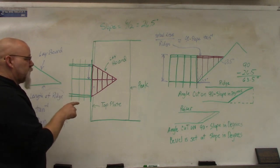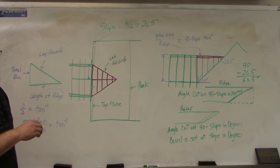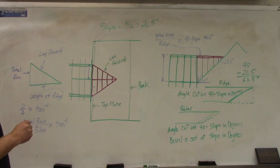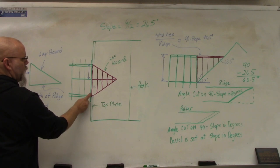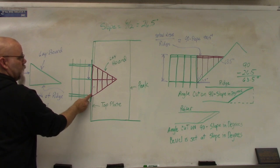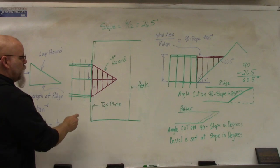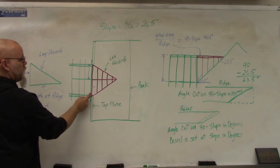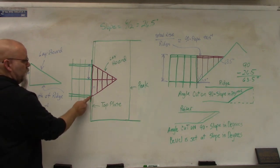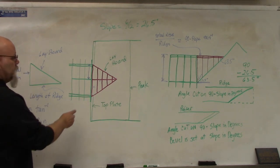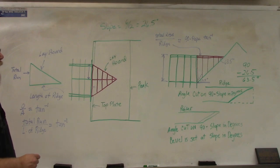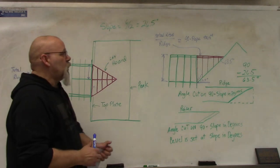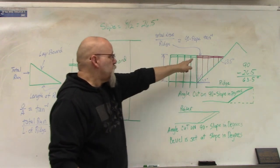We're going to mathematically figure out all of these rafters so we don't have to go up on the roof. The first thing we need to figure out are these rafters right here that make up this beam. Since these two will be attached together, they kind of make up a beam. This rafter will be the same as this rafter — the only difference is you have to cut the tail off at the bottom.